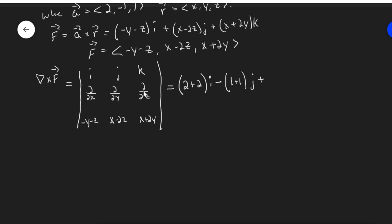And then finally, in the k direction, we'll have partial with respect to x of x minus 2z, that's 1. Partial with respect to y of minus y minus z is minus 1, and so we'll get plus 1 here in the k direction. And so this is the vector 4, negative 2, 2.